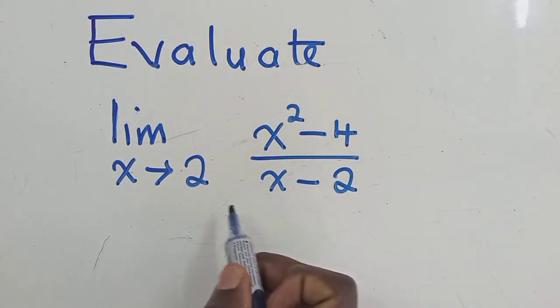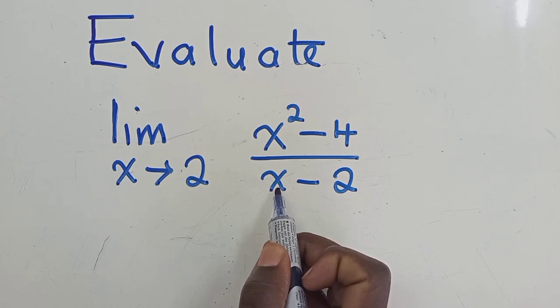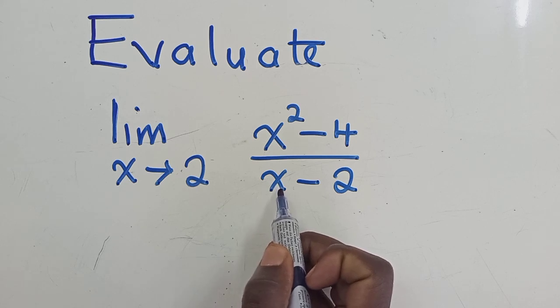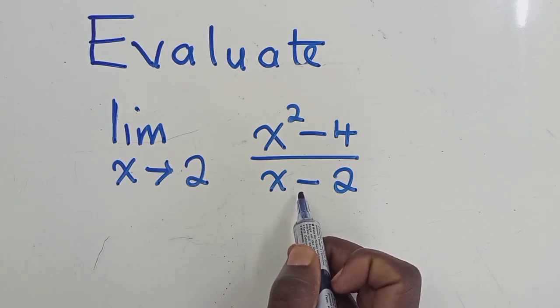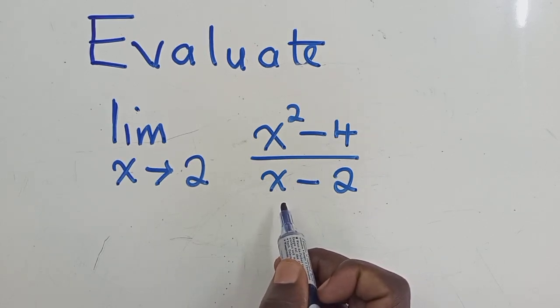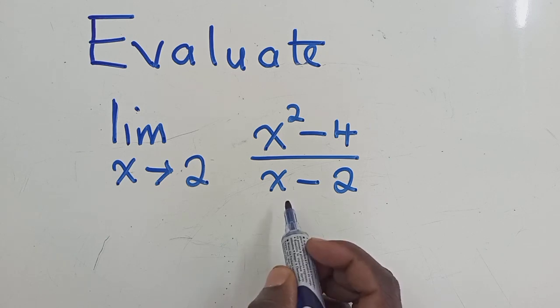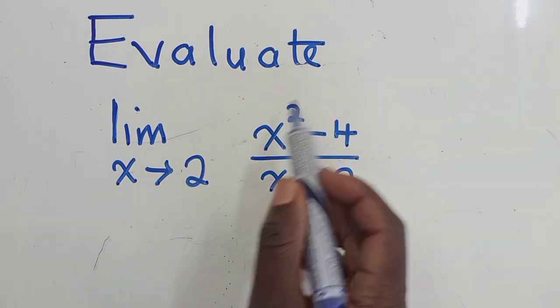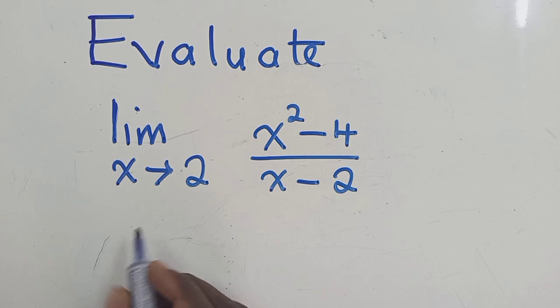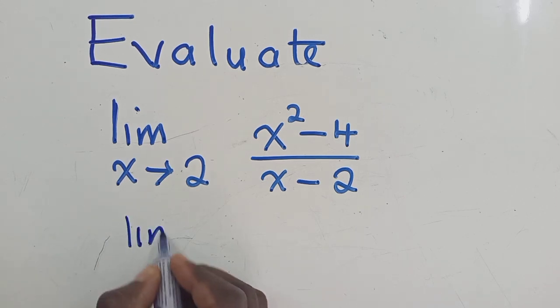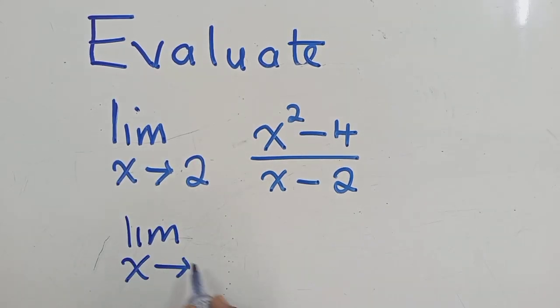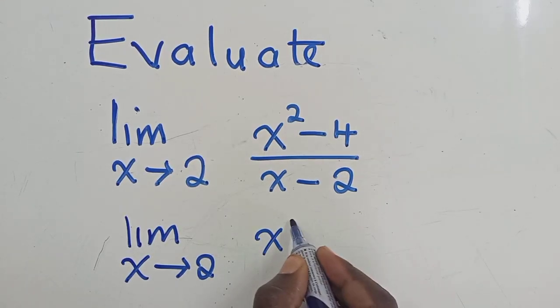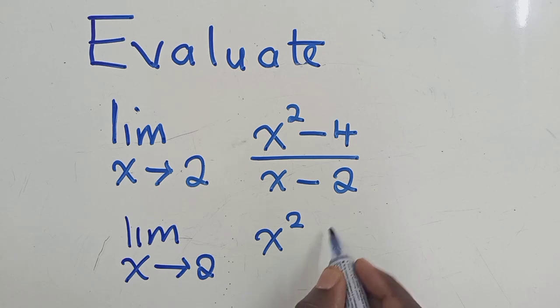So we can't substitute the 2 here. The reason being, if we put 2 here, we shall have a 0 denominator, which is mathematically wrong and it's not what we want. So we need to play with it until when we plug a 2 down there, we have something else apart from a 0. So this is what we have right here.